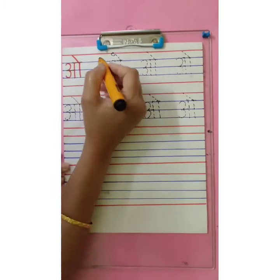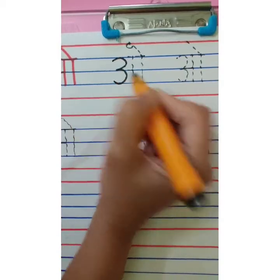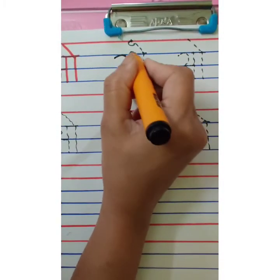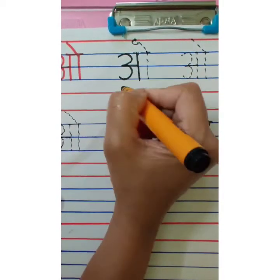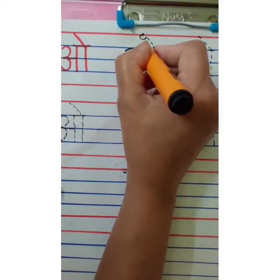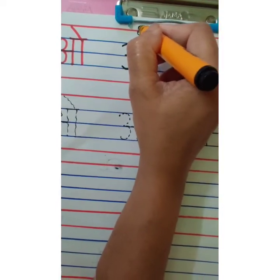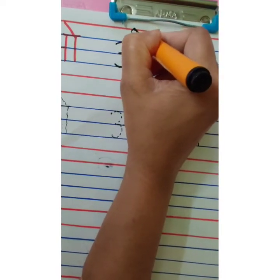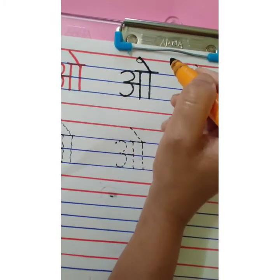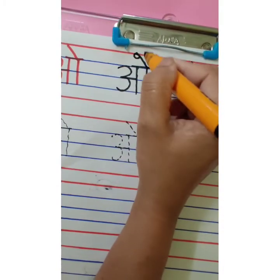Now let's learn how to write O. Start with the first blue line, write number 3, then sleeping line, then standing line — this is A. One more standing line — this is A. Then overhead small sleeping line and then you have to give matra like this: slanting line, slanting line, which is called matra, and there is a small curve on this matra like this. This is O.